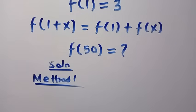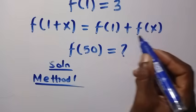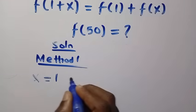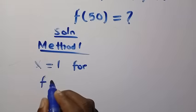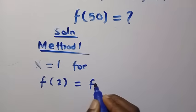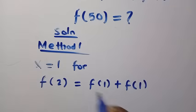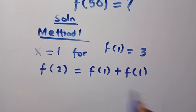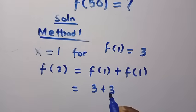For the first method, we start from the functional equation: f(1 + x) = f(1) + f(x). If we let x = 1, then the left side becomes f(2), which equals f(1) + f(1). Since f(1) is given as 3, we get f(2) = 3 + 3.